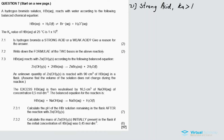For 7.2, write down the formula of the two bases in the reaction. Since the reaction is reversible: in the forward reaction, this water molecule receives a proton to form a hydronium ion, so that makes it a base — the first base. In the reverse reaction, the hydronium ion donates a proton to the bromide ion. So the two bases are water (H₂O) and the bromide ion (Br⁻).